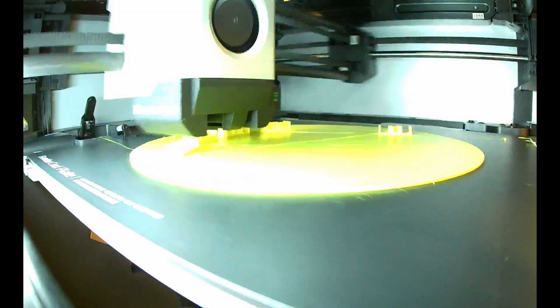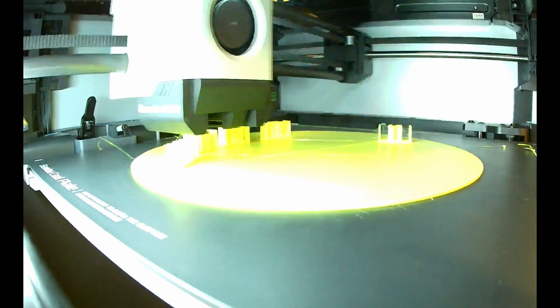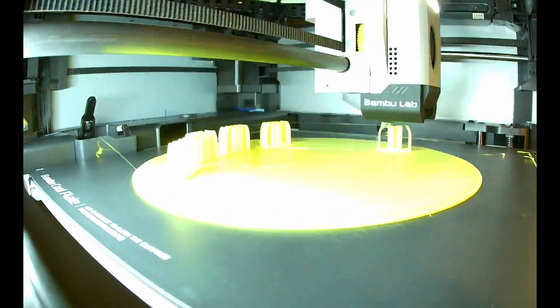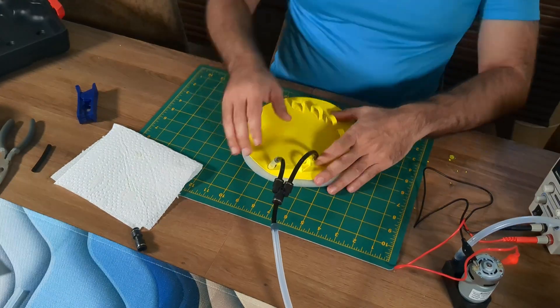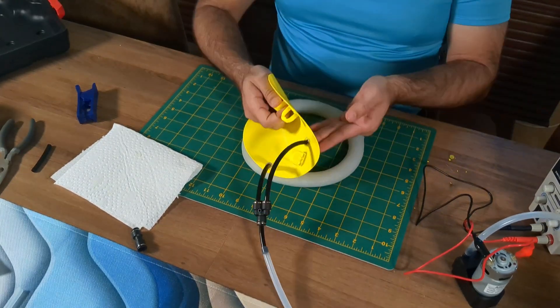Now that we have the rim, we need the top, so I quickly whipped one up and printed it out in TPU, which is flexible. And there was nothing left to do but connect it up and test it. And of course, it totally didn't work.